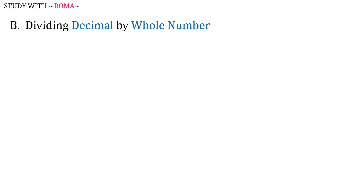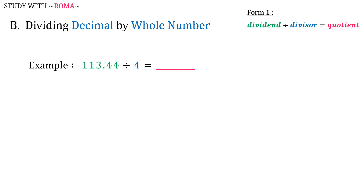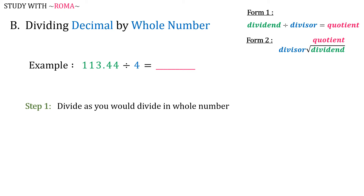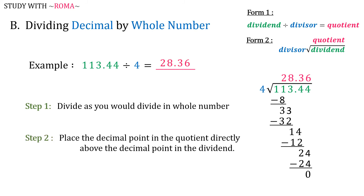Now, let's have dividing decimal by whole number. For example, 113.44 divided by 4. There are two forms. Step 1: Divide as you would divide whole numbers. Step 2: Place the decimal point in the quotient directly above the decimal point in the dividend. So, 113.44 divided by 4 is equal to 28.36.